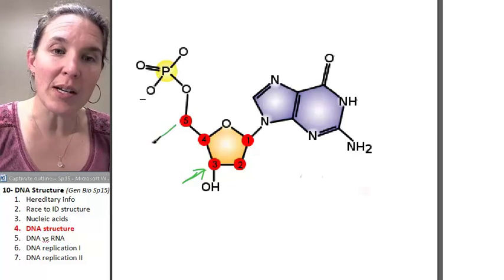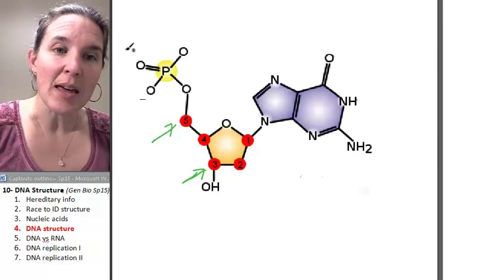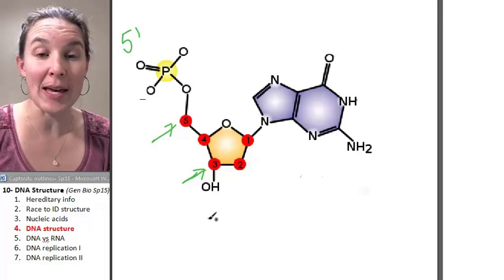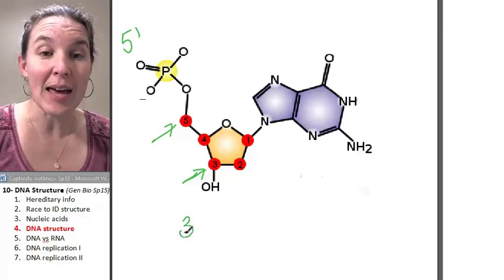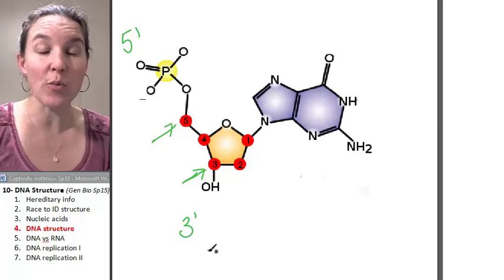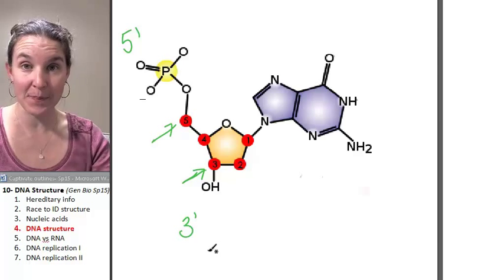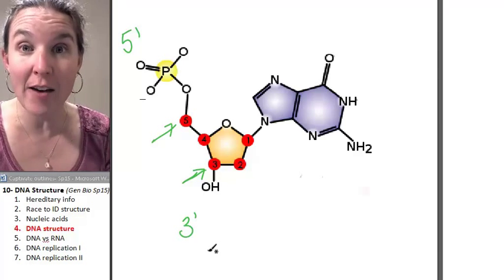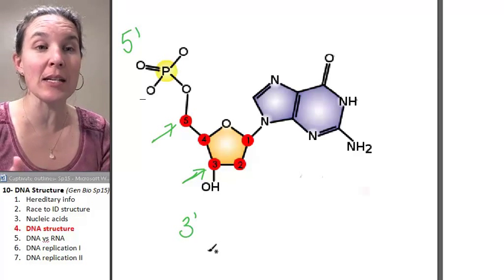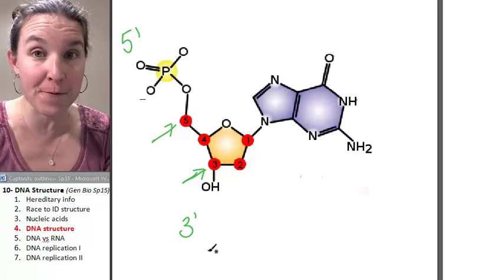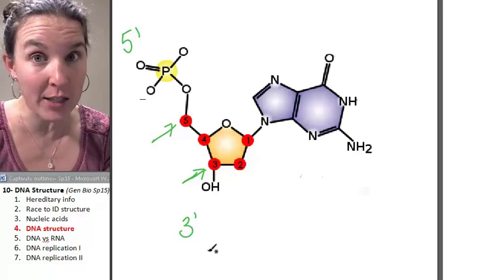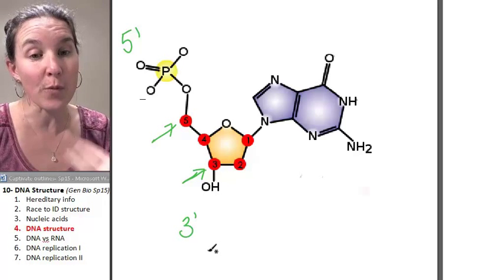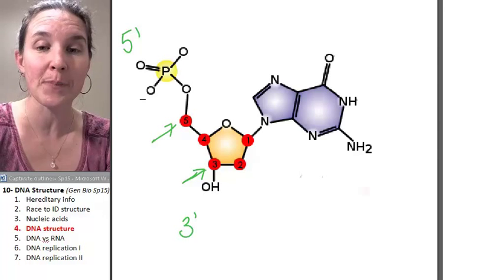So notice that this would be called the five prime end, and this would be the three prime end. The five prime end is the phosphate end, and the three prime end has the sugar on it.